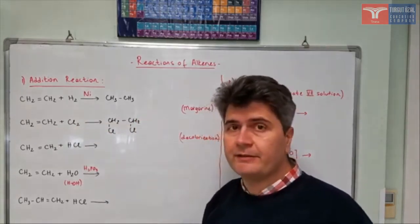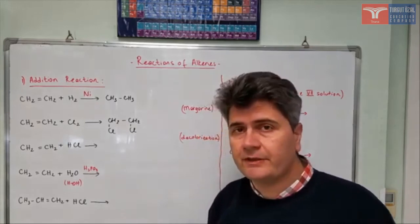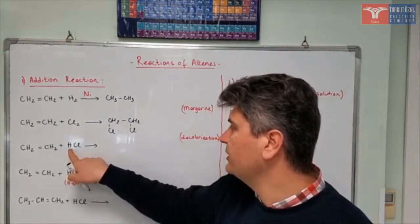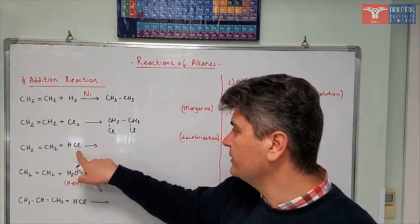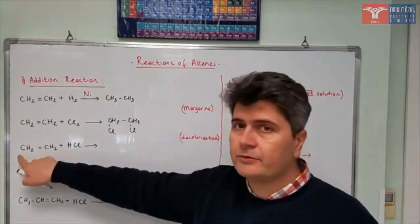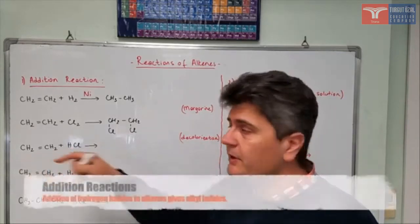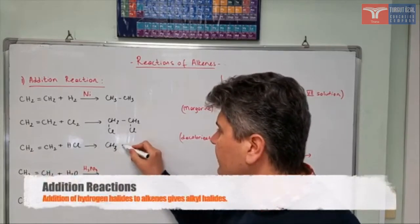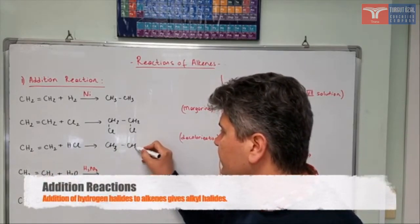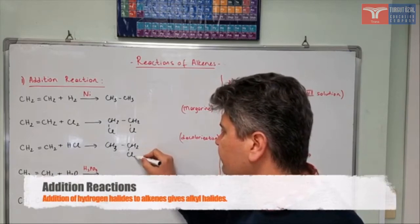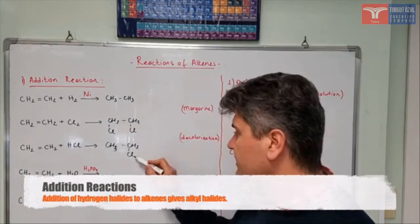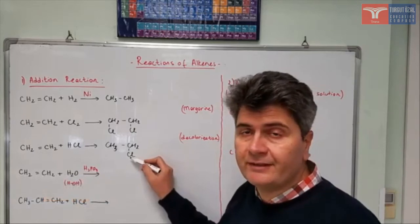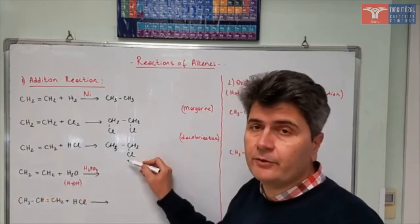Let's see the third case: addition of hydrogen halides. I have hydrogen halide to be added — hydrogen goes to one carbon, chlorine goes to the other one. So CH₂ becomes CH₃ and the second CH₂ becomes CH₂Cl. In this case it doesn't matter where you add the chlorine, because in both cases what you'll get is chloroethane.